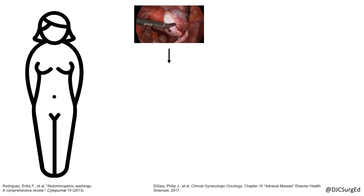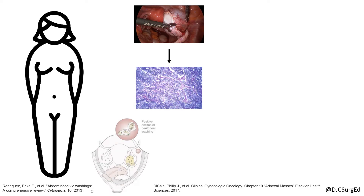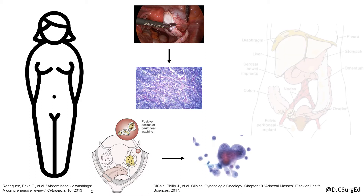If discovered at time of operation, the suspicious mass should be resected with frozen sections for immediate diagnosis, as well as cytologic evaluation of ascites or peritoneal washings. Close attention should be paid to the diaphragm, surface of the liver, pericolic gutters, omentum, and small and large bowel mesenteries.